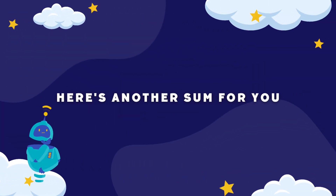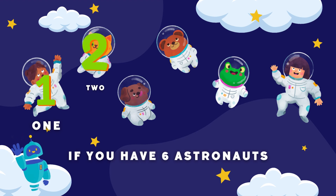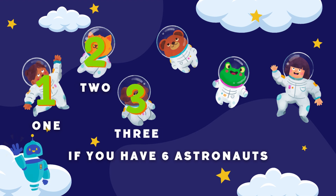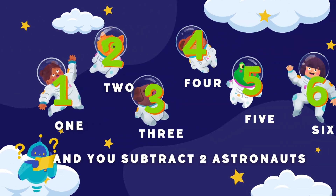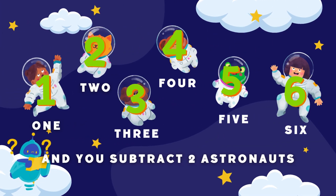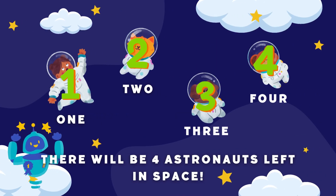Now here's another sum for you to follow along with. If you have six astronauts: Astronaut 1, Astronaut 2, Astronaut 3, Astronaut 4, Astronaut 5, and Astronaut 6. And we subtract two astronauts — Astronaut 6 and Astronaut 5. How many astronauts do you think will be left in space? There will be four astronauts left in space.